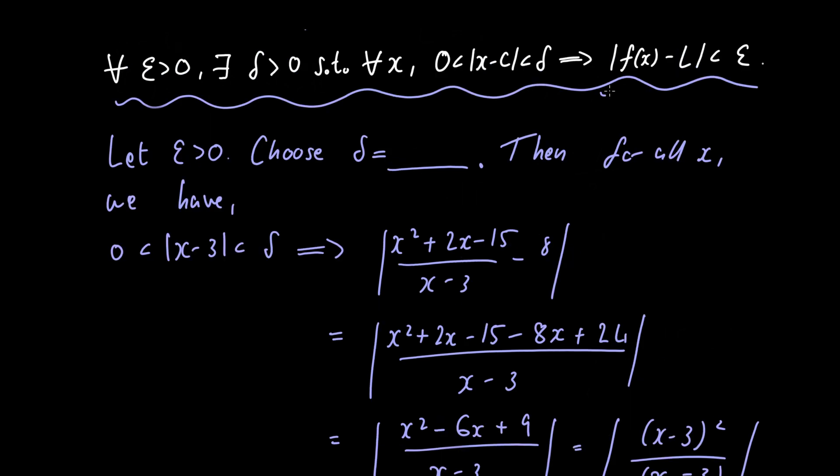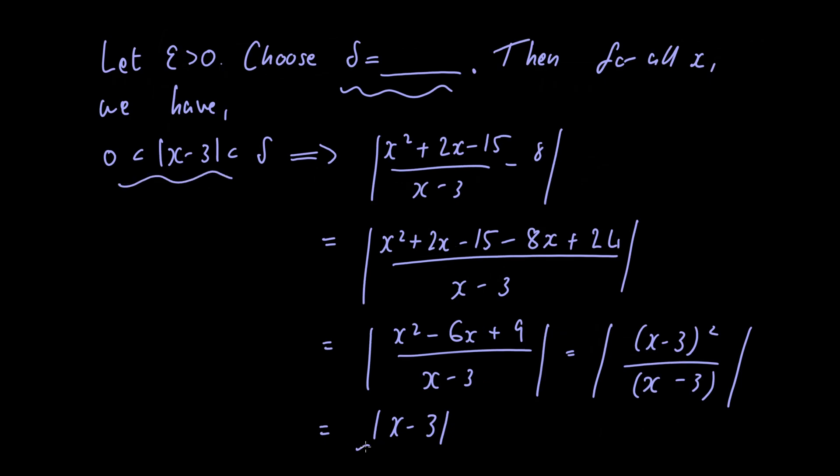Now remember right here we wrote that we need the absolute value of f of x minus l is less than epsilon. So what value should we choose for our delta based upon what we have here and what we have here?